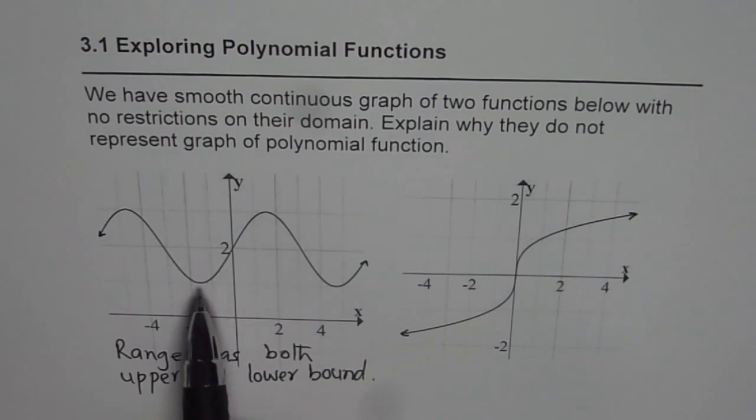Do you understand? So there is upper bound and a lower bound. For a polynomial, there is no restriction on range if the degree is odd. But if it is even, then we could have either upper bound or a lower bound but not both. And that is the reason why this smooth curve is not a representation of a polynomial.